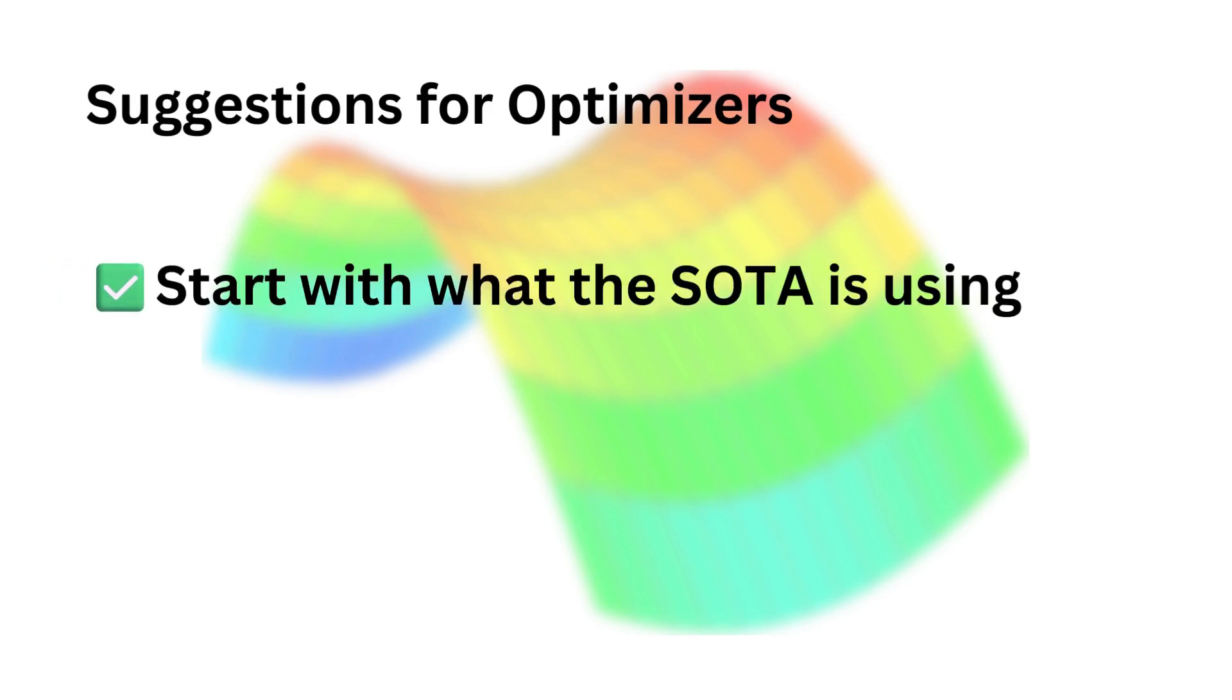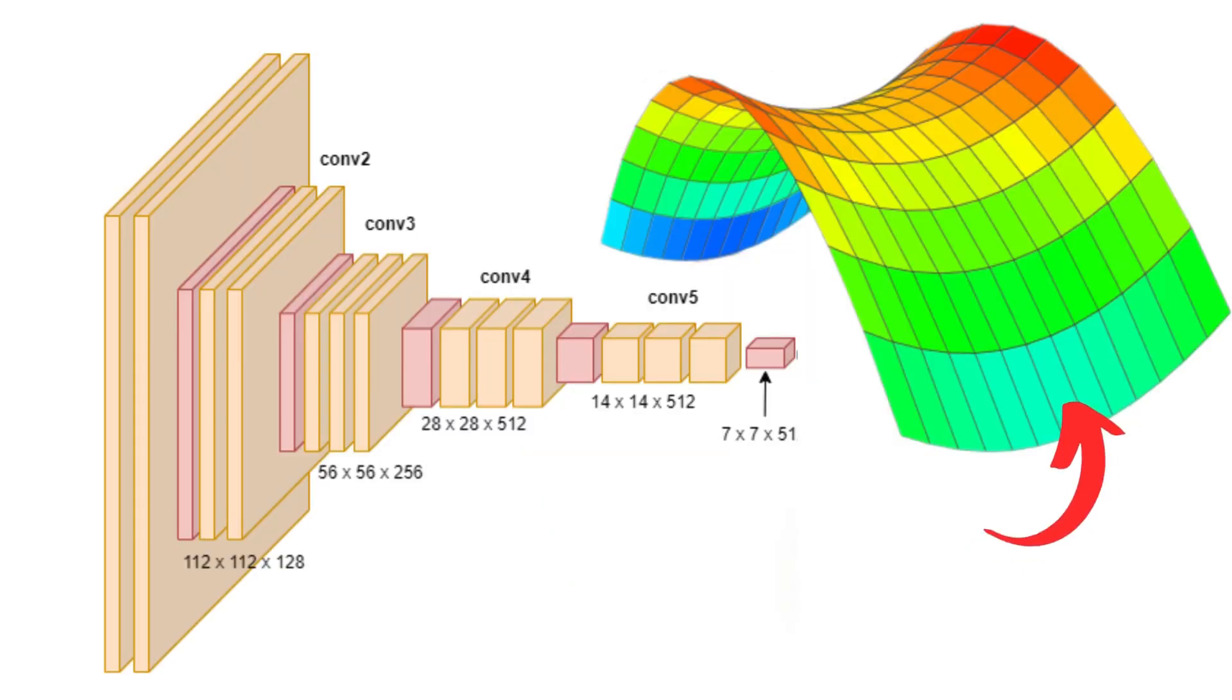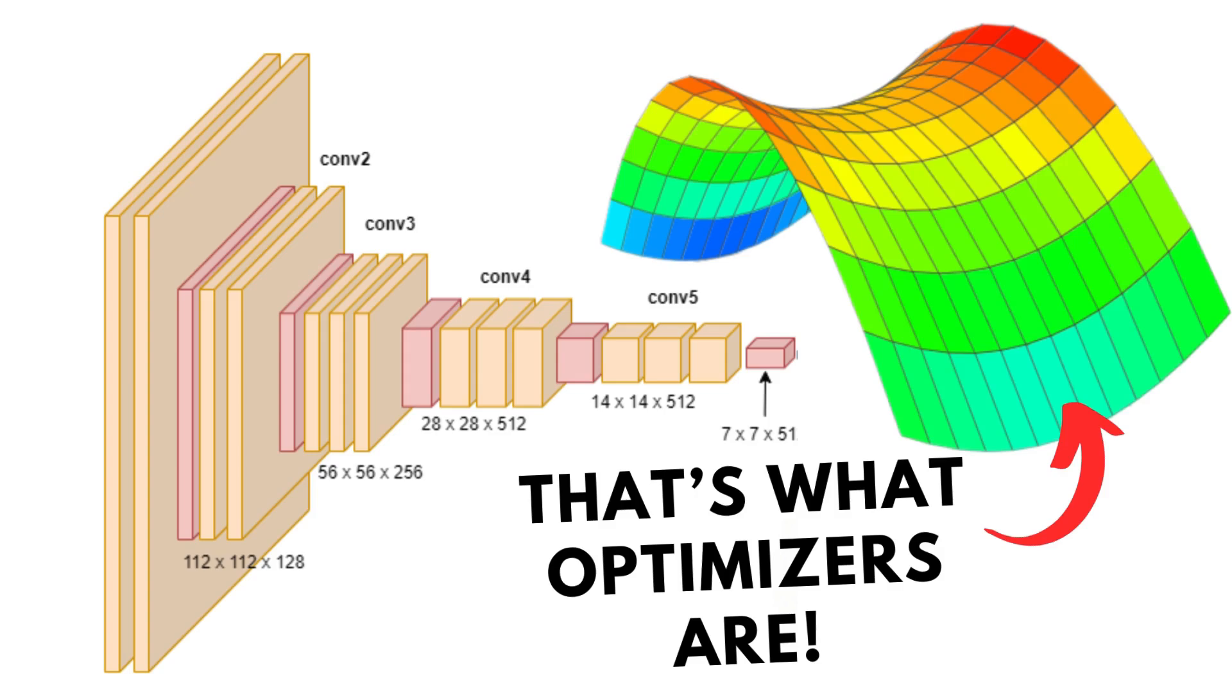So my suggestion for optimizers in general is: always start with what the state of the art is using for your specific use case. Don't overcomplicate yourself with optimizers to start out yet. If you have some time during your deep learning project, do experiment with a bunch to check out how these optimizers change your model performance.